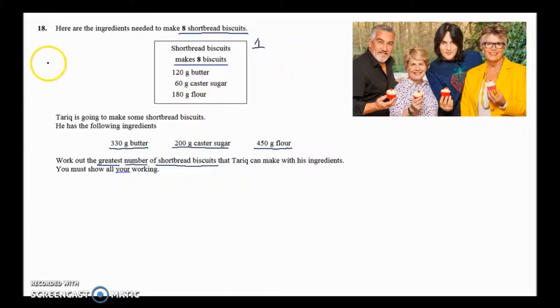I need to divide all of these figures by 8 and that will tell me how much I need for 1. I'm going to use the bus stop method. So 8 divided into 120 to work out how much butter 1 biscuit needs. 8 into 1 doesn't go, cross the 1 out, pass it forward. 8 into 12 goes once, remainder 4. 8 into 40 goes 5. So I need 15 grams of butter for 1 biscuit.